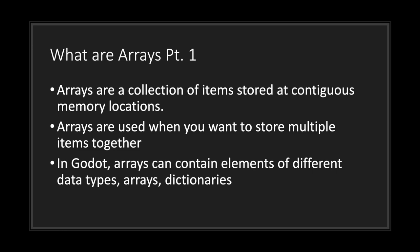So what exactly is an array? Arrays are a collection of items stored at contiguous memory locations. What that basically means is that when stored in memory, the addresses are assigned sequentially.